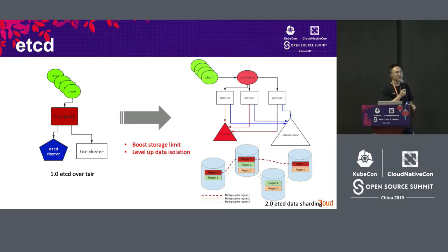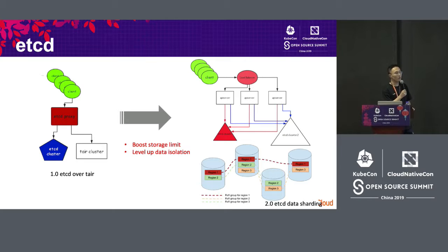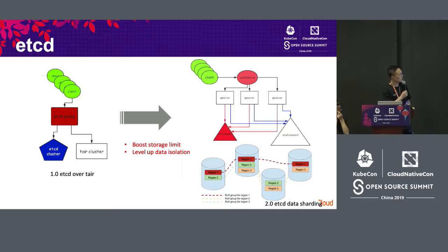If you operate one resource and it sees a spike, it will affect other resources. That's why we have this 2.0 structure shown on the right-hand graph. We based it on separate ETCD servers for different resources — the key prefixes are different, so we divided them into different ETCD clusters. By doing this, the ETCD clusters can have higher storage capacity and we have different raft groups, so data isolation is handled pretty well.